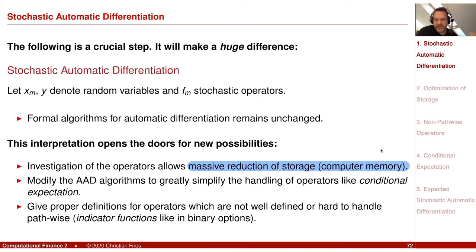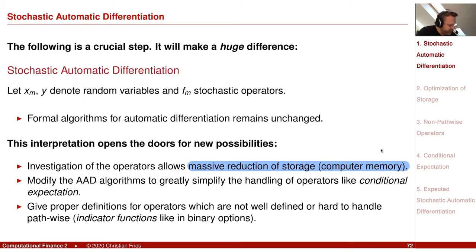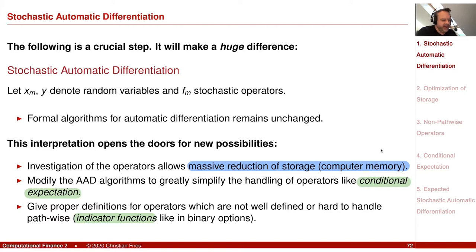Looking at our applications where we calculate expectations of random variables, we can define special treatments for more complicated operators. In the floating point number view, we had simple operators like add, subtract, multiply, exponential. But now for random variables there may be more complicated operators, like a conditional expectation, which maps random variables to random variables. An indicator function is also a very common function in mathematical finance and other Monte Carlo applications. So we now look at what algorithmic differentiation does on these operators.